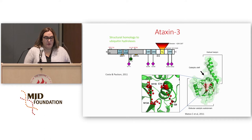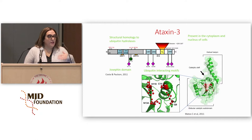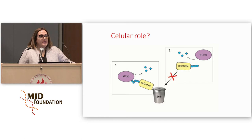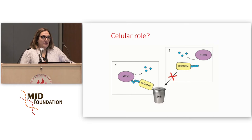As we have heard before, Ataxin-3 is a protein that was initially discovered to have structural homologies to ubiquitin-hydrolases, and actually shown to have this activity in vivo. It does possess ubiquitin-interacting motifs. It's present both in the cytoplasm and in the nucleus of cells, and we know that it has a deubiquitinating activity. This activity may serve two purposes: either to facilitate the entry of substrates into the proteasome — facilitating degradation — or, oppositely, to retard the degradation of proteins by keeping them less ubiquitinated.